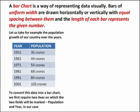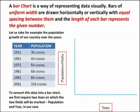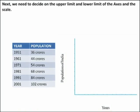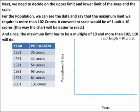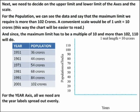To convert this data into a bar chart, we first require two axes on which the two fields will be marked — population and year in our case. Next, we need to decide on the upper limit and lower limit of the axis and the scale. For the population, we can see that the maximum limit required is more than 102 crores. A convenient scale would be one unit equal to 10 crores, making the chart easier to read. Since the maximum limit has to be a multiple of 10 and more than 102, 110 will do.